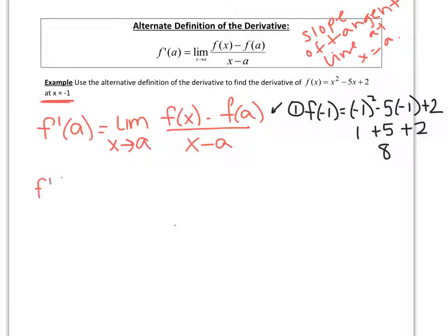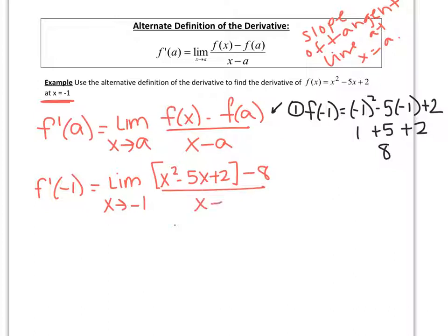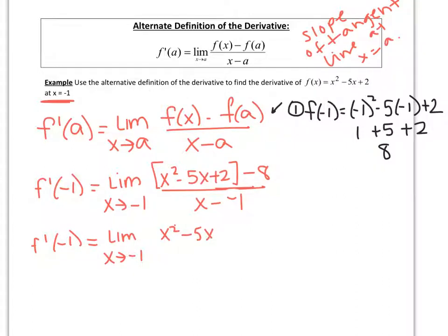So now we have f prime of negative 1 equals the limit as x approaches negative 1 of f of x — which is x squared minus 5x plus 2 — minus f of a, which is 8, all over x minus a, where a is negative 1. So the denominator becomes x plus 1, and combining 2 minus 8 gives negative 6, leaving x squared minus 5x minus 6 over x plus 1.